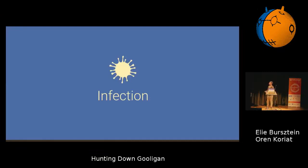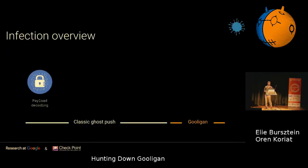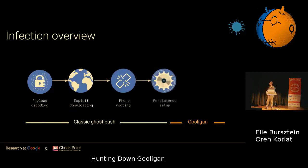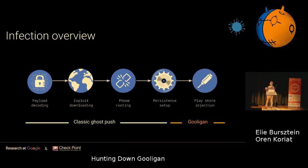In order to understand Gooligan as a botnet, we first need to understand Gooligan as a Trojan — as the Android client of this botnet. The Gooligan kill chain is comprised of several key steps. The first is decoding the payload, which is embedded into the Gooligan APK. Once decoded, this payload is responsible for dynamically downloading a rootkit. This rootkit is used to root the device, and if successful, Gooligan is then free to install its persistency kit utils — most interestingly, a util that enables Gooligan to infect the local Google Play process.